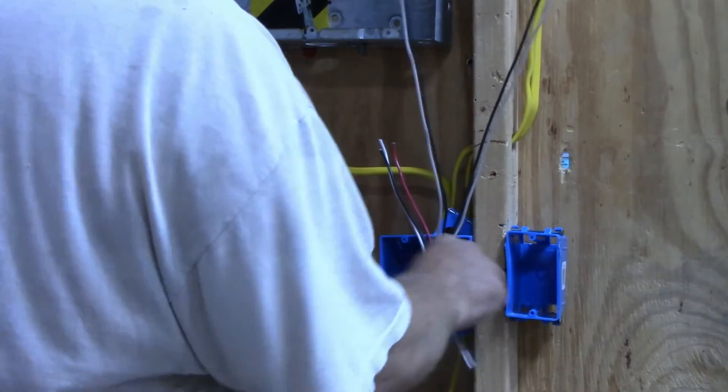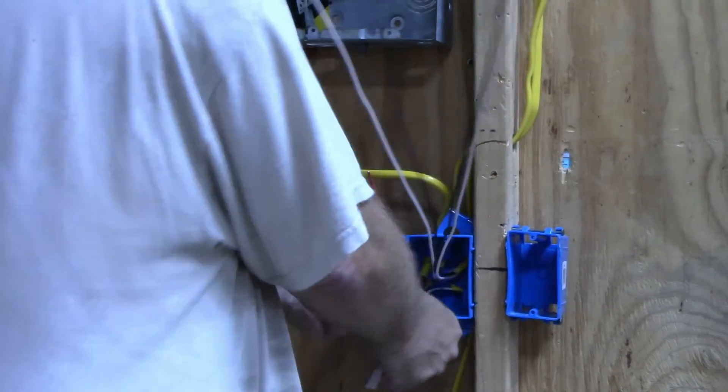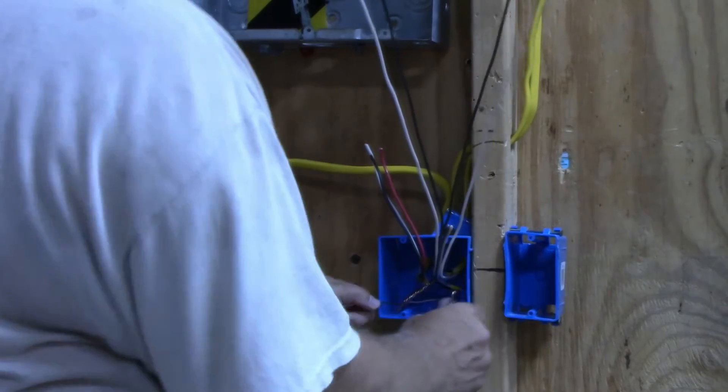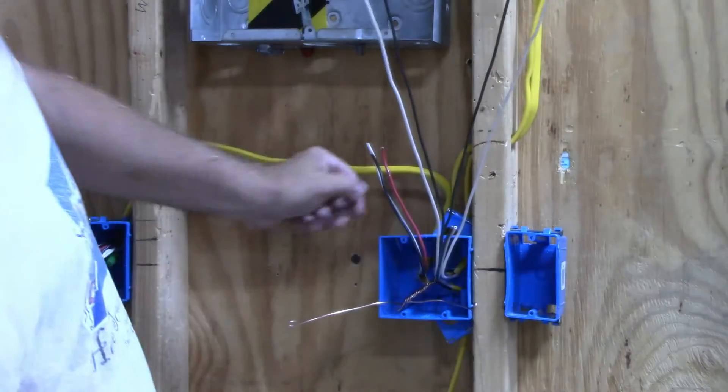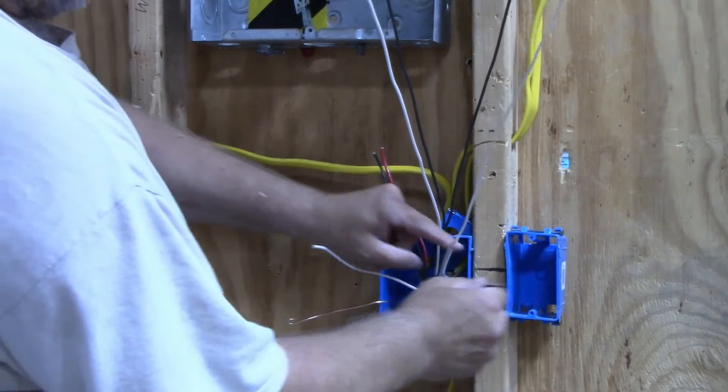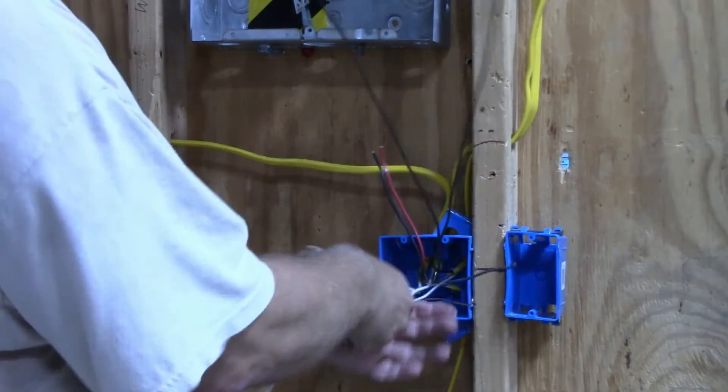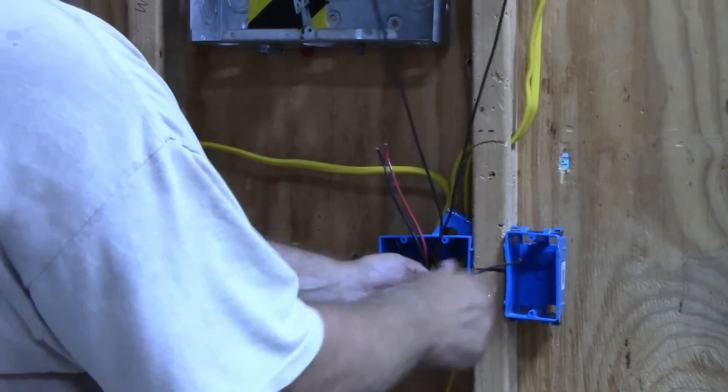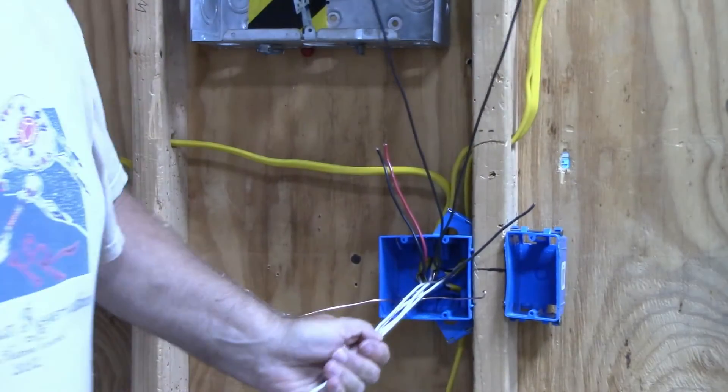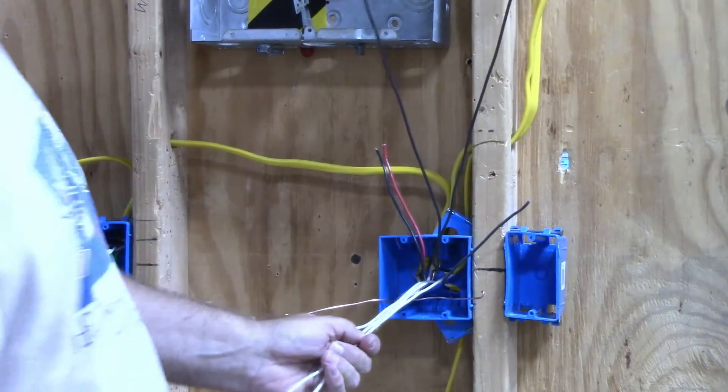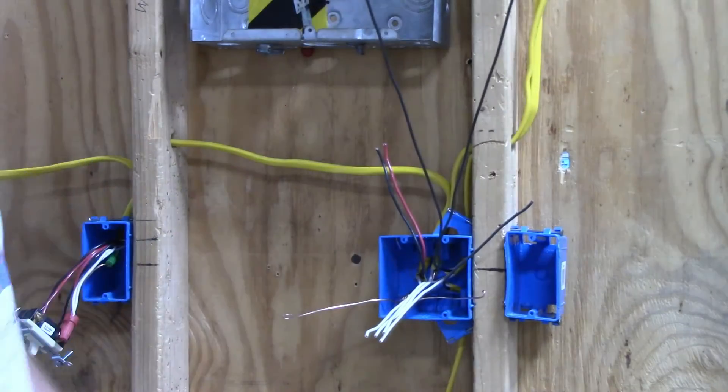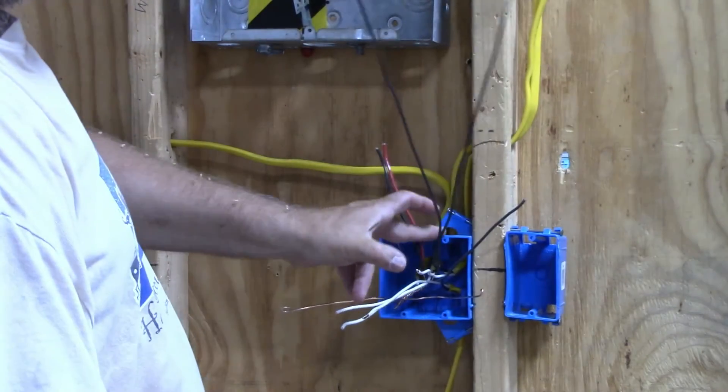Then we're going to shove them into the box out of the way. Next thing we're going to hook together are the neutral wires. Since this is all one circuit, all of these neutral wires need to be hooked together. I snip them all the same length, about six inches left outside the box.